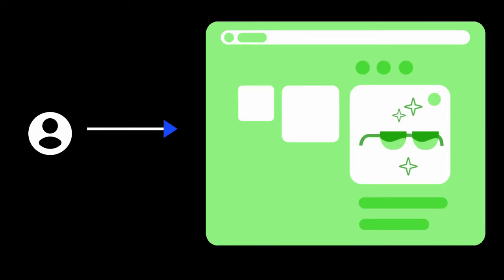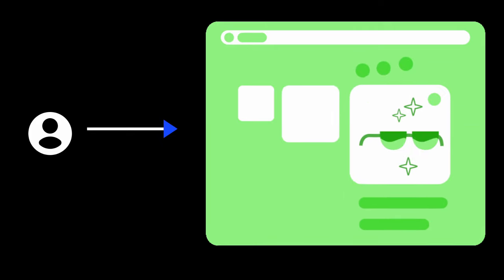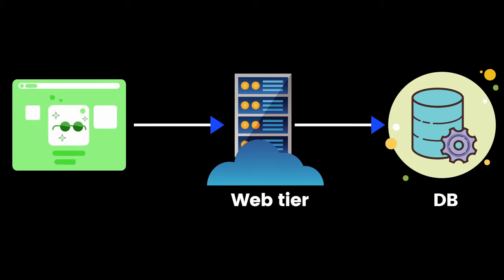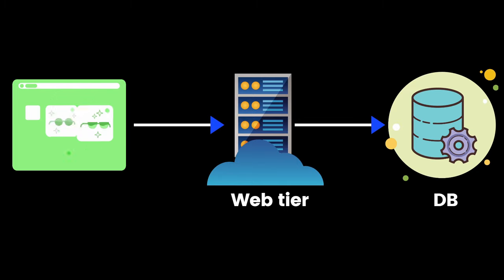A user is trying to access an e-commerce website. Let's say you are planning to architect an e-commerce website and a user is trying to access it. When the user goes to the browser and enters www.amazon.com or flipkart.com, it first goes through DNS resolution, then the HTTP request will go to the web tier. If there are any database components — such as getting information about products or features — that information is stored in the database.